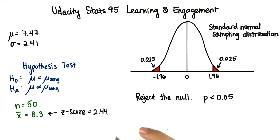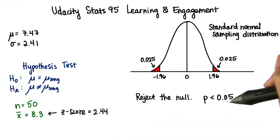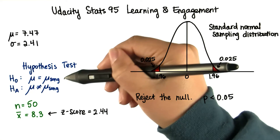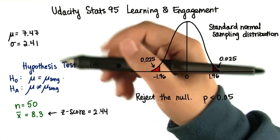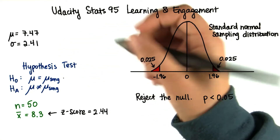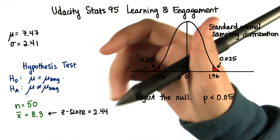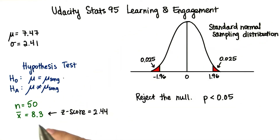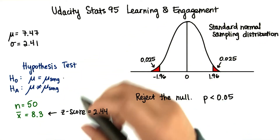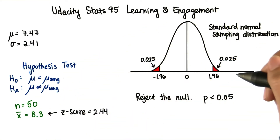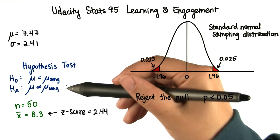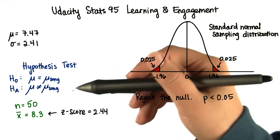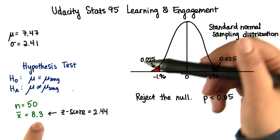The reason we reject the null is because this probability is so low. Let's pretend that the null hypothesis is true, and there's actually not going to be a difference between our new population and our current population parameters. If the null hypothesis is true, what's the probability of getting this sample mean?